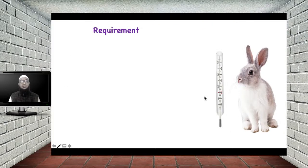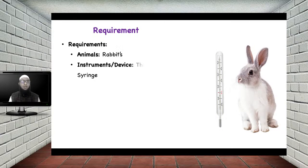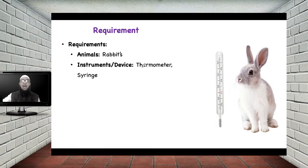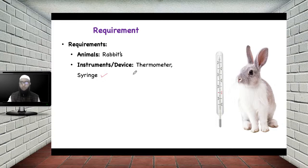Now let us see the requirements of the experiment. We need animals — the animal used is the rabbit. The instrument needed is a thermometer to measure temperature; we use a clinical thermometer, and in the lab a digital thermometer is also available. In addition, we use a syringe for giving the injection of the parenteral formulation.